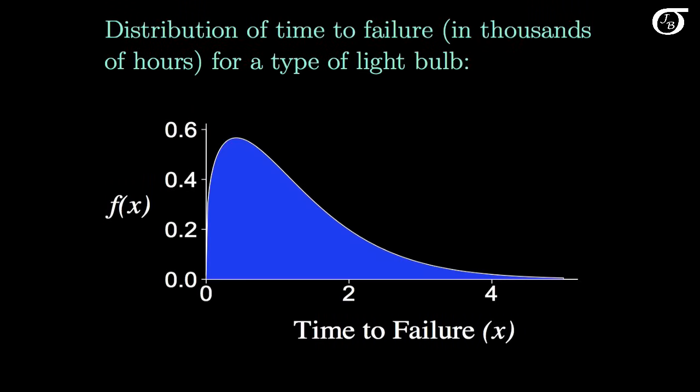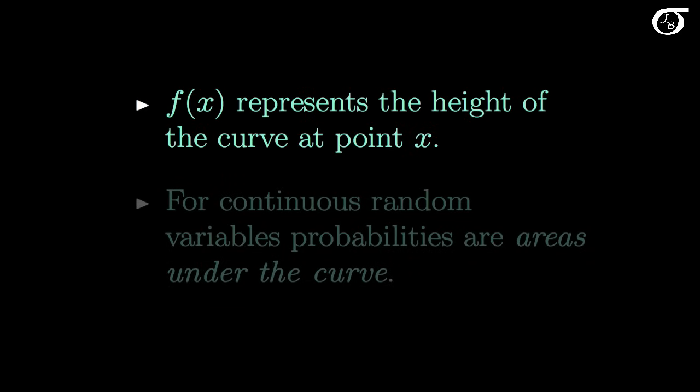Here's another example of a continuous probability distribution: the distribution of time to failure in thousands of hours for a type of light bulb. Values the random variable can take on are given down here on the x-axis. And the probability density function f is a function giving the height of the curve at those values of x. f of x represents the height of the curve at point x.